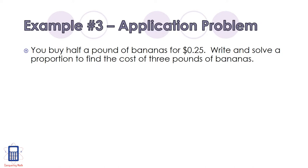Now let's look at an application problem. You buy half a pound of bananas for 25 cents. Write and solve a proportion to find the cost of 3 pounds of bananas. So the first thing we need to do is define the variable. So in this case I chose c for cost, or the total cost of the bananas. So we have 0.5 over 0.25 equals 3 over c. I have one half on top because it's half of a pound over 25 cents, and that equals 3 pounds over the unknown cost.